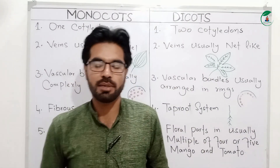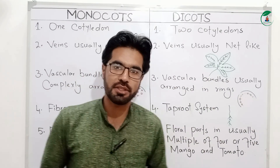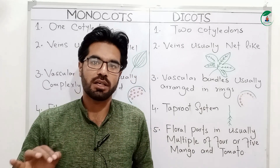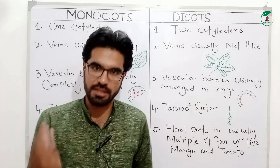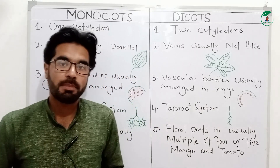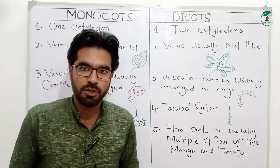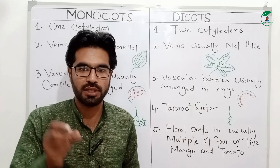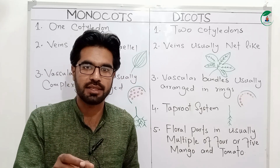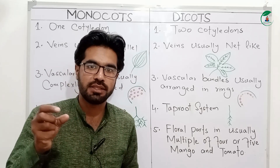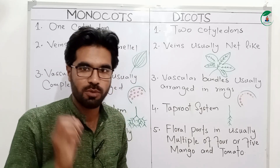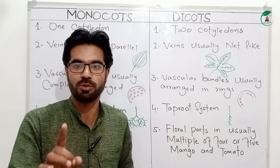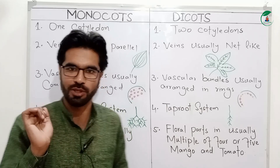In our embryo, there are two types of cells, like in the monocot or the cotyledon, and the seed will be provided with a cotyledon.